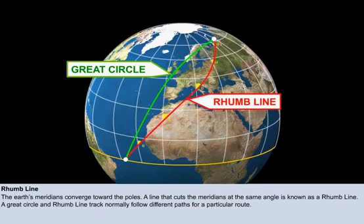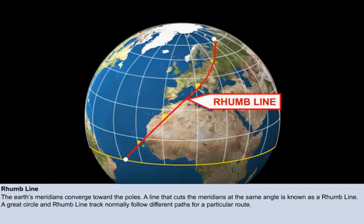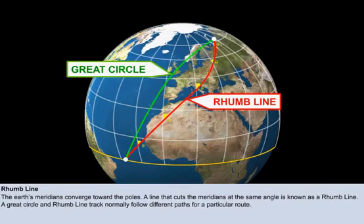From the diagram on the screen, we can see that a typical great circle track follows a different path over the Earth's surface to the rhumb line track, between the same departure and destination positions.